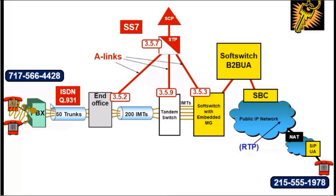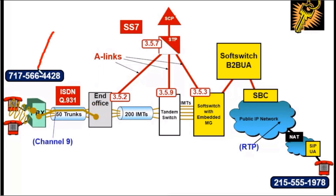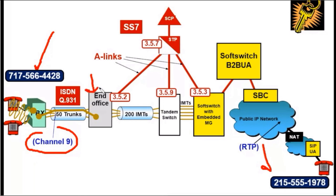A setup message is sent from the PBX to the end office. The setup message contains the calling party's number, the called party's number, and also the channel that the call is on. Now that the end office knows this information, it must make an autonomous decision based on this information. The decision that it makes is part of its routing table known as the dial plan. It has its own dial plan.